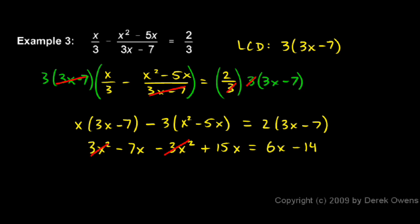I have on the left, I have a 15x and a minus 7x. And those will combine to give me an 8x on the left. And on the right I still have 6x minus 14.